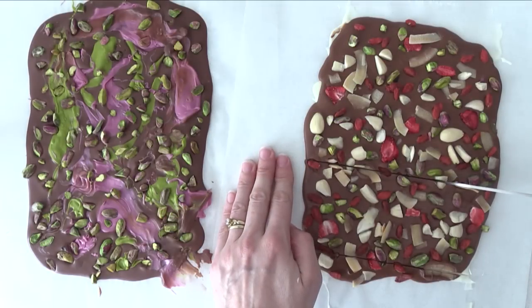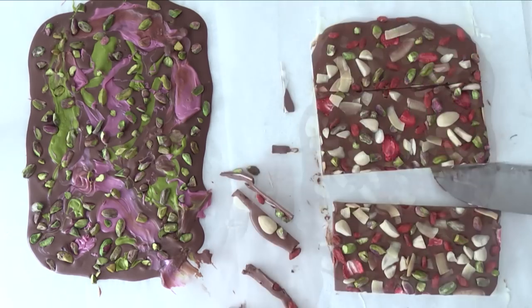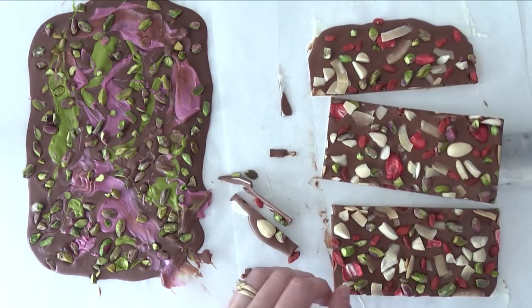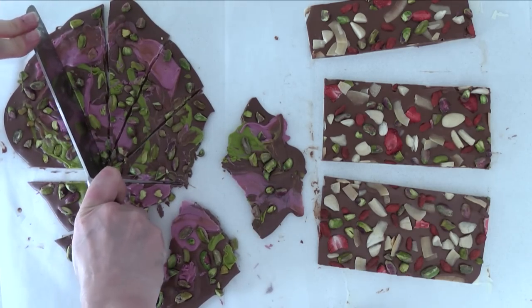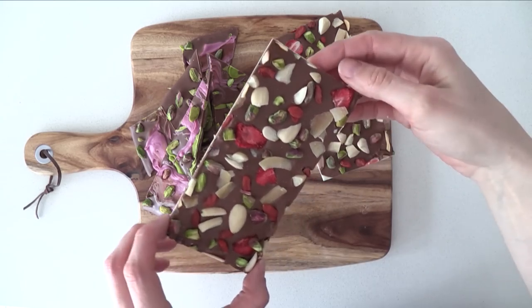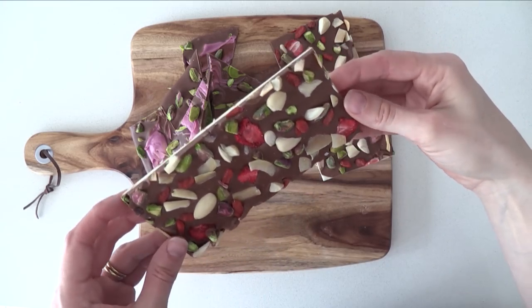Once they are starting to firm up you can slice them into blocks and then package them as blocks like that. Or you can break them or cut them into shards and put them into smaller blocks just putting lots of slices in there. And they make just beautiful looking and delicious gifts.